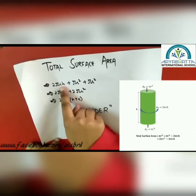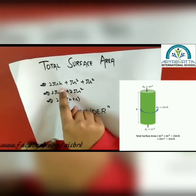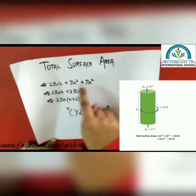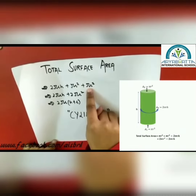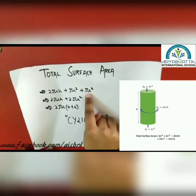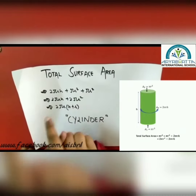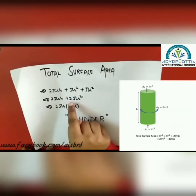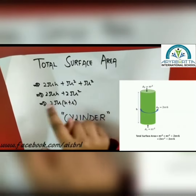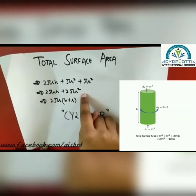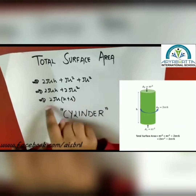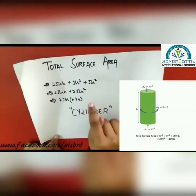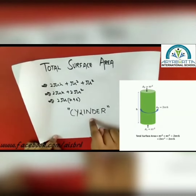The lateral surface area of the cylinder is 2πrh, the area of the top is πr², and the area of the bottom is πr². When we add these three, we get 2πrh + 2πr². This can be factored as 2πr(h + r), which is the total surface area of the cylinder.